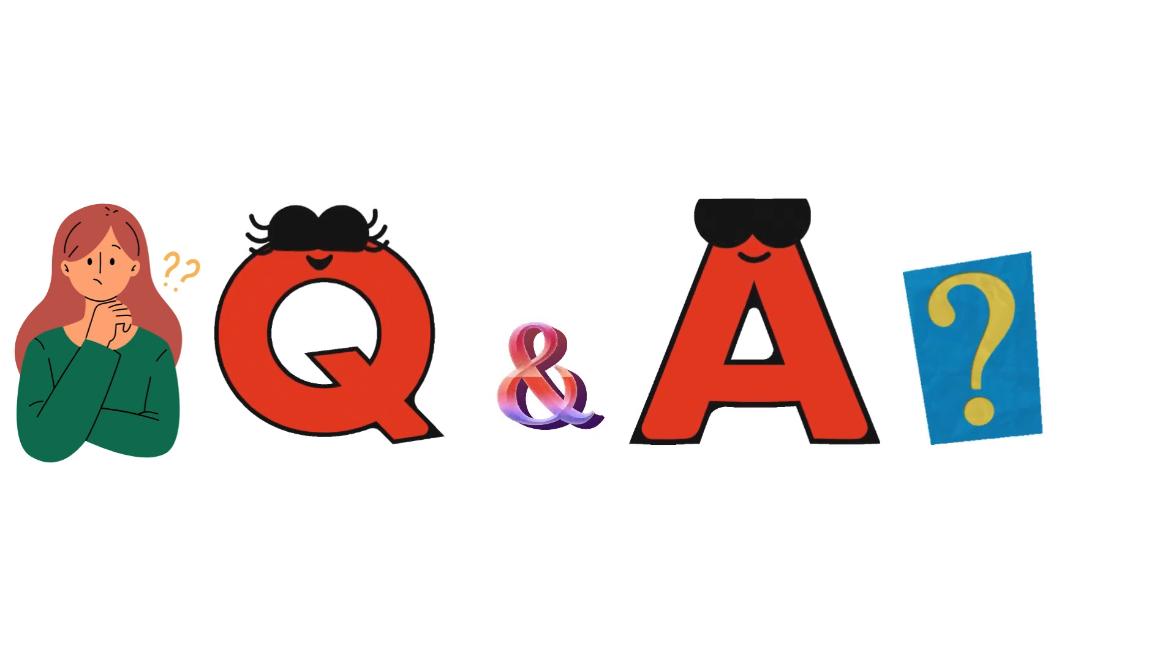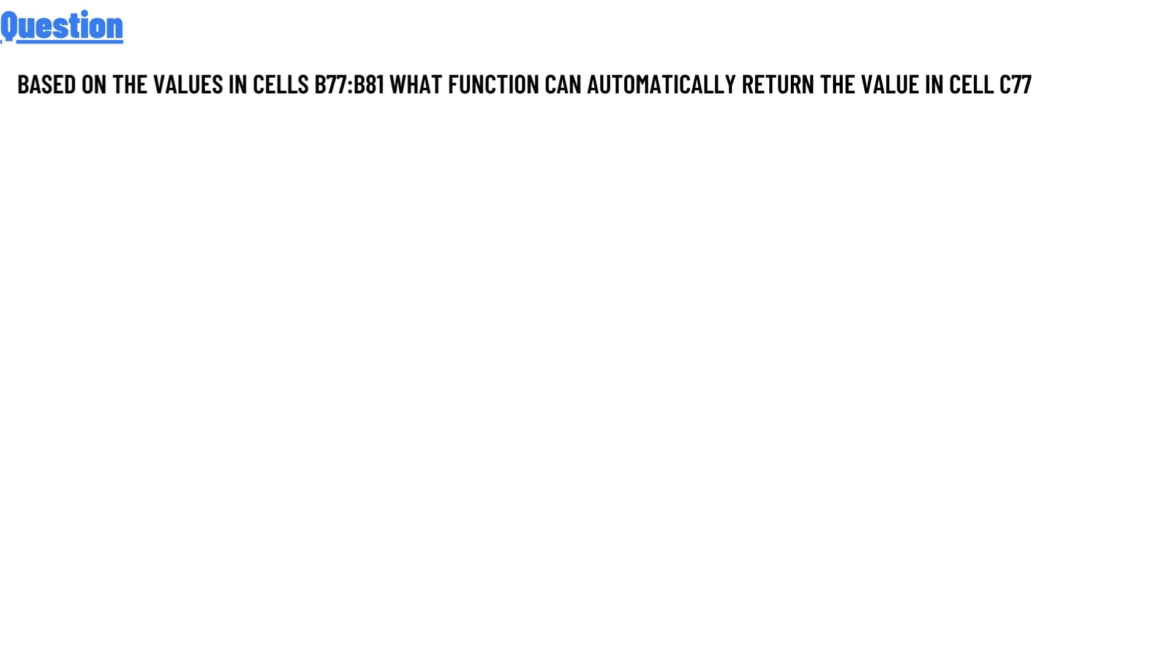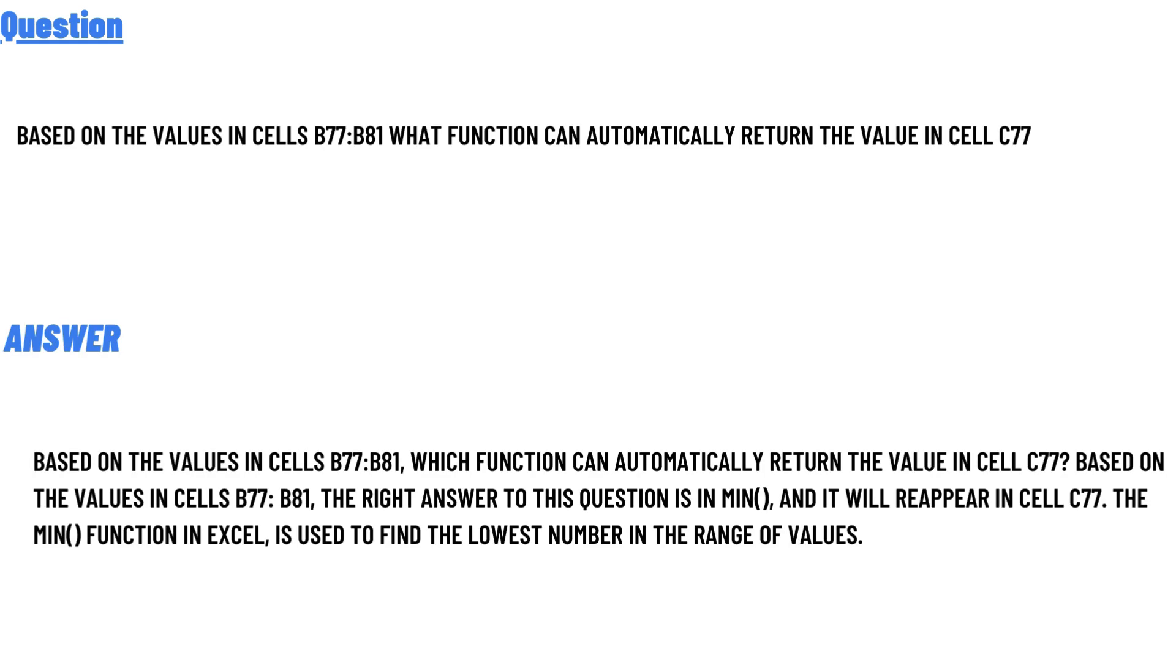So our today's question is: Based on the values in cells B77 to B81, what function can automatically return the value in cell C77? The correct answer to the question is based on the values in cells B77 to B81, which function can automatically return the value in cell C77.